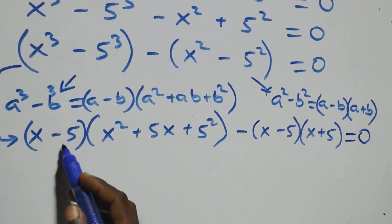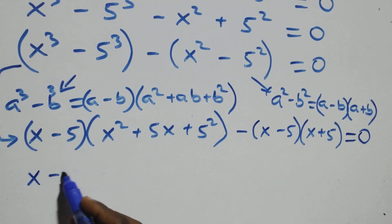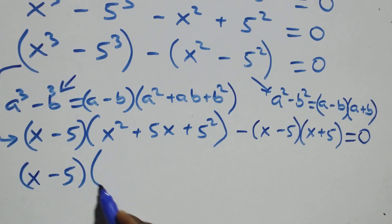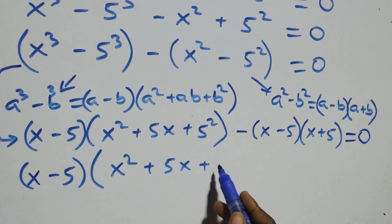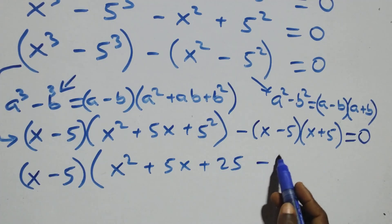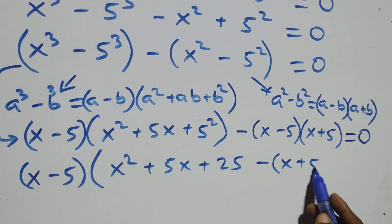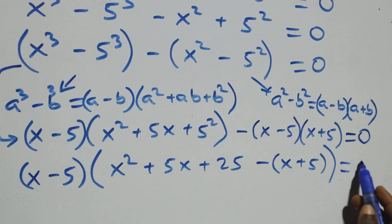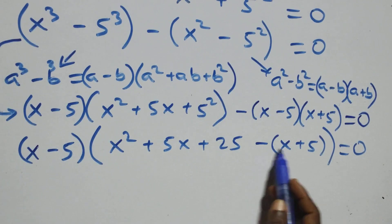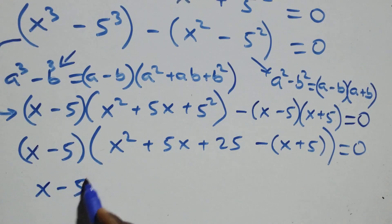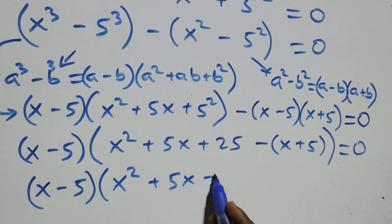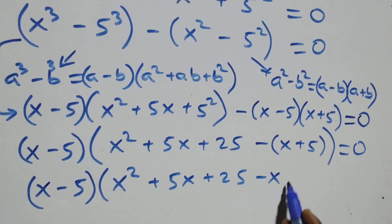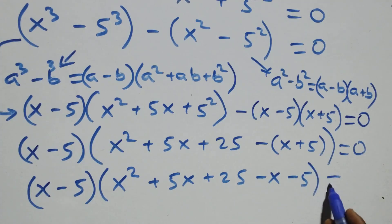The next step: x minus 5 is a common factor. Factoring it out, we have x minus 5 times open bracket x squared plus 5x plus 25 minus into bracket x plus 5 close bracket, equals to 0. Opening the inner bracket: x minus 5 times open bracket x squared plus 5x plus 25 minus x minus 5 close bracket equals to 0.